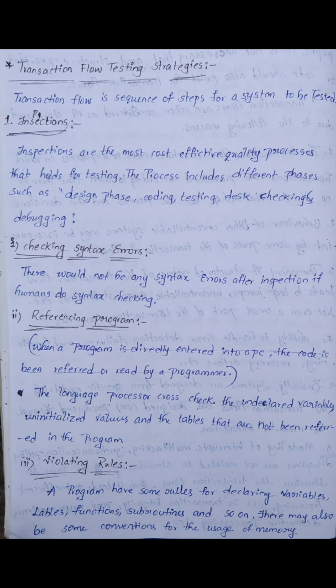Variable names can use underscores but not spaces. Only alphanumeric characters and underscores are valid in variable names. The program has rules for declaring variables, labels, functions, and subroutines. There may also be conversions from usage of memory — memory usage has some rules that can cause cross bugs.